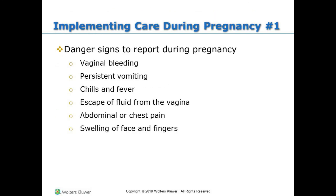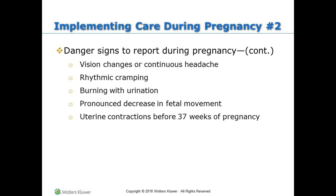Implementing care during pregnancy — danger signs to report during pregnancy include: vaginal bleeding, persistent vomiting, chills and fever, escape of fluid from the vagina, abdominal or chest pain, swelling of face and fingers, vision changes or continuous headache, rhythmic cramping, burning with urination, pronounced decrease in fetal movement, and uterine contractions before 37 weeks of pregnancy.